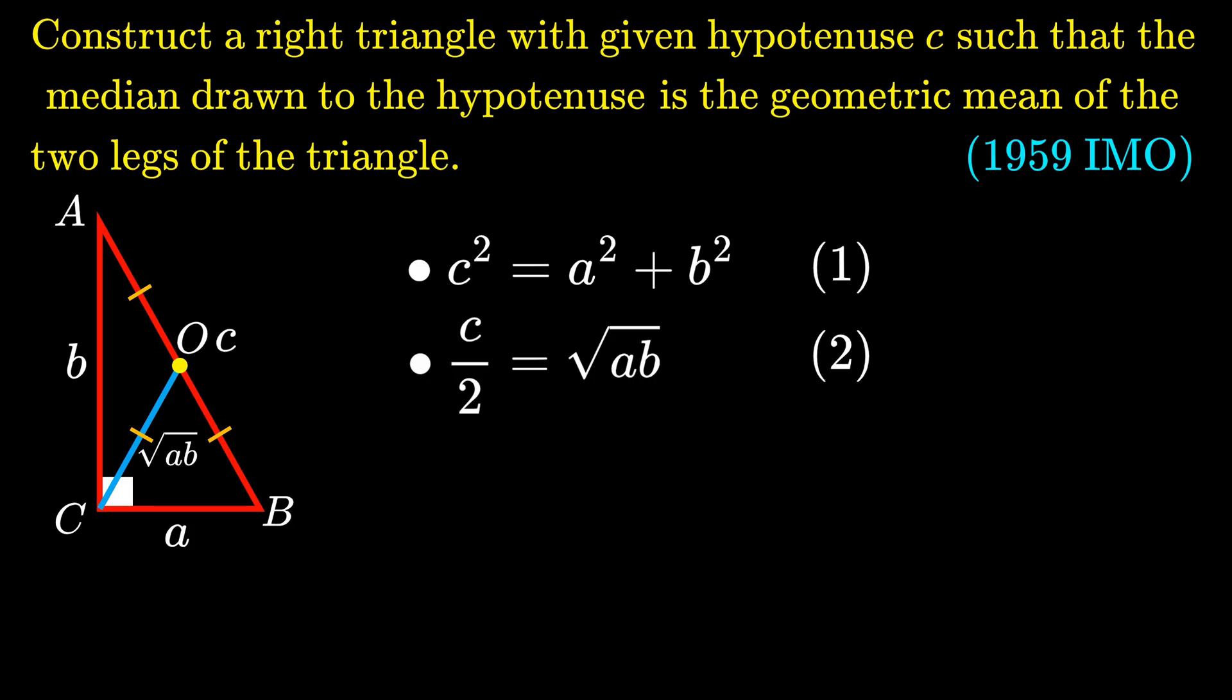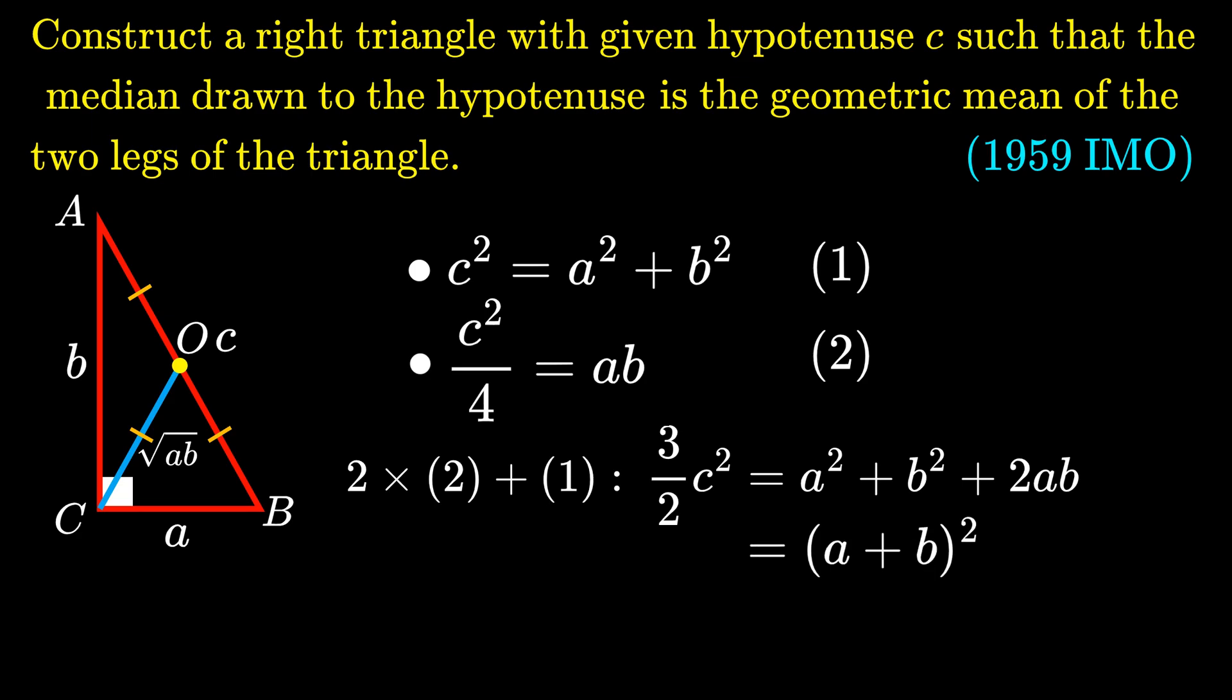Let's square both sides of the second equation and multiply both sides by 2. Then add it to the first equation, and we get the equivalent condition that (3/2)C² = A² + B² + 2AB, which is (A + B)². Taking the square root of both sides, we have √(3/2) · C = A + B.